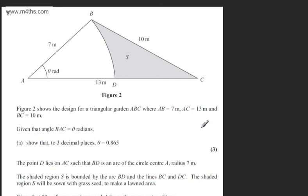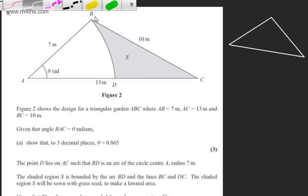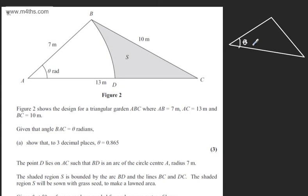The question carries three marks. If I just draw a little sketch, we can take from this the information we need. We've got 7 metres, 10 metres and 13 metres. We've got theta just here, 13 here, 7 here and 10 here.